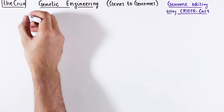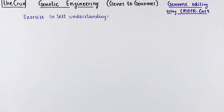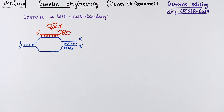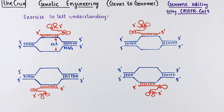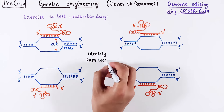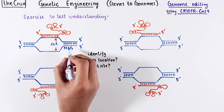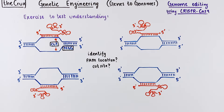Here's a little exercise for you. We discussed this target DNA and guide RNA configuration, where the PAM sequence is, and the location of the cut site. Here are other possible configurations for target DNA and guide RNA — can you identify the location of the PAM sequence and cut sites in these configurations? Pause the video and try it out. You will find the answer to this exercise later in the video.